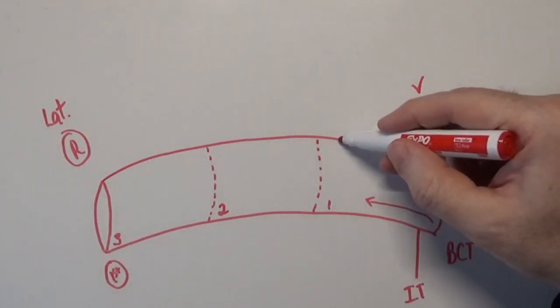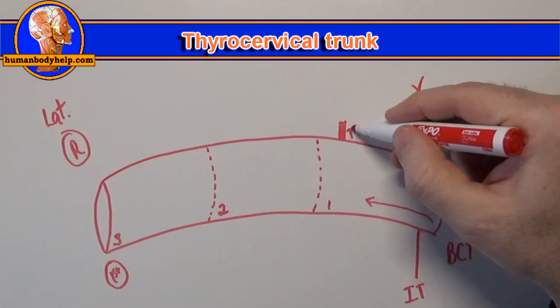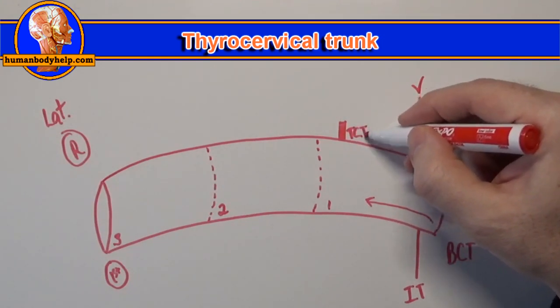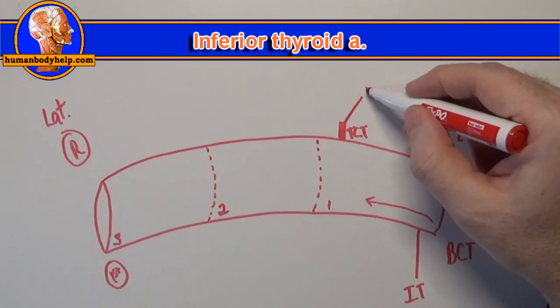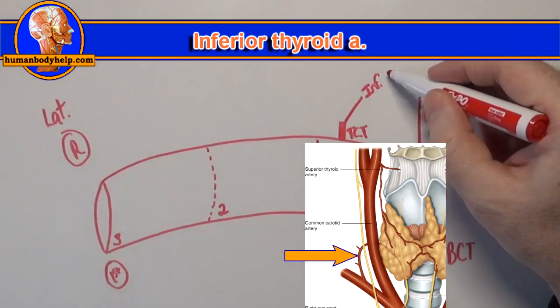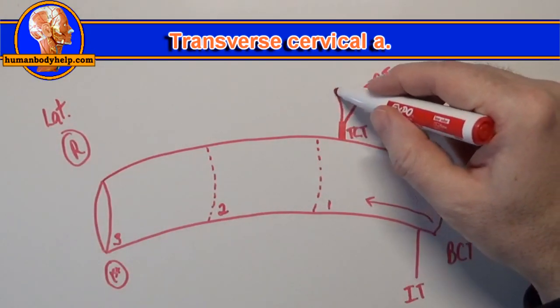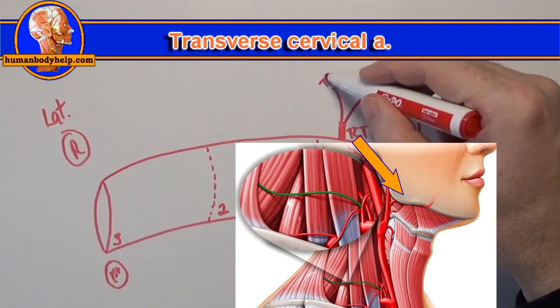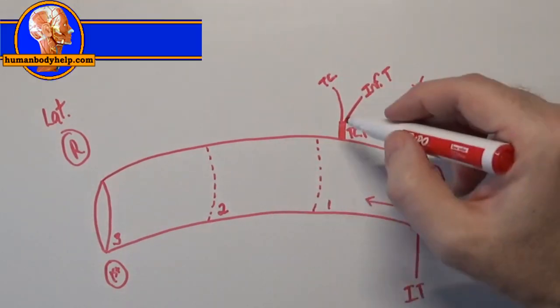Next to the medial border of the anterior scalene I'll draw the thyrocervical trunk. Now the thyrocervical trunk has three branches of its own. The first branch is the inferior thyroid artery, and this extends upward to supply the lower portion of the thyroid gland. The second branch, the transverse cervical artery, runs across the front of the anterior scalene. The third branch, the suprascapular artery, runs posteriorly to pass over the transverse scapular ligament over the suprascapular notch.